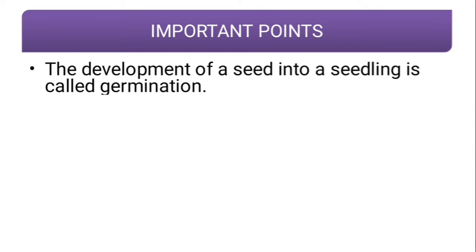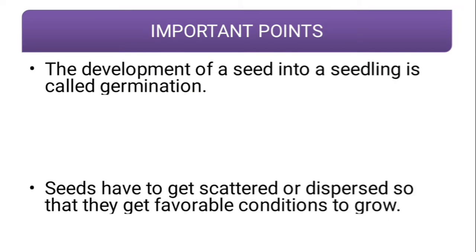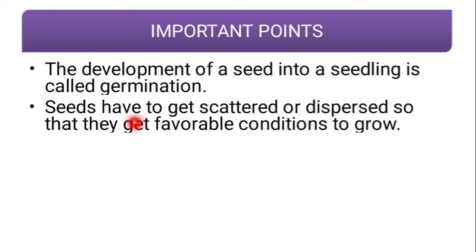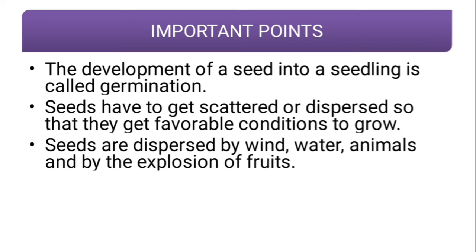The development of a seed into a seedling is called germination. Seeds have to get scattered or dispersed so that they get favorable conditions to grow. If seeds just fall beneath the tree, they will not get sufficient water or sunlight to grow well, so they need to be dispersed.